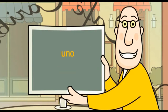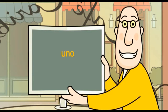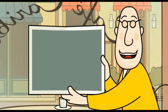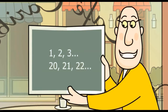The number one — uno — and numbers ending in uno, like veintiuno, have more than one form. Before masculine nouns, uno is shortened to un. Before feminine nouns, uno changes to una. Un hombre, veintiún hombres; una mujer, veintiuna mujeres. But pay attention: the forms uno and veintiuno are used when counting, like uno, dos, tres, or veinte, veintiuno, veintidós, and so on.